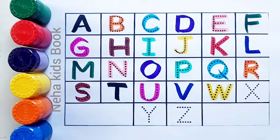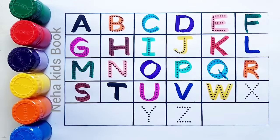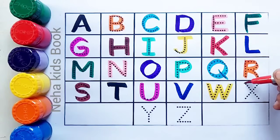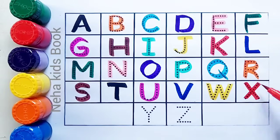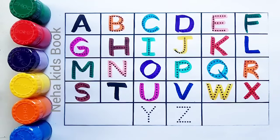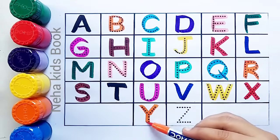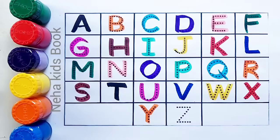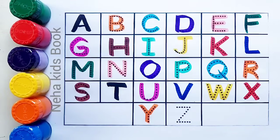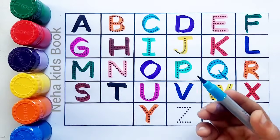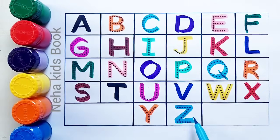W, W for watermelon, W for watermelon. W ke baad aata hai X. X for x-ray, X for x-ray. Orange color. Y, Y for yellow, Y for yellow. Y ke baad aata hai Z. Sky blue color. Z, Z for zebra, Z for zebra.